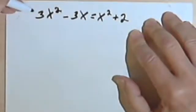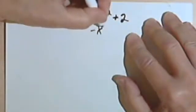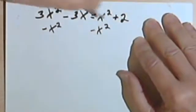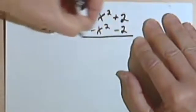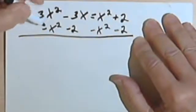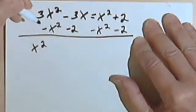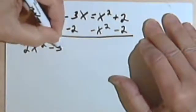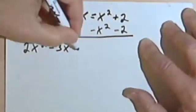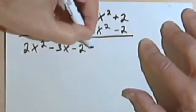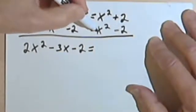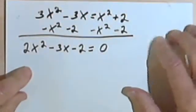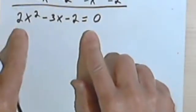What I want to do is get everything on one side — all the terms on one side. So I'll subtract x squared from both sides. You can subtract more than one thing at a time, so let's also subtract the 2 from both sides. 3x squared minus x squared is 2x squared. I've still got that negative 3x, and subtracting gives me a negative 2. On the right side, x squared minus x squared cancels, and 2 minus 2 cancels, so I've got 0 on the right. Now I've got a quadratic equation in standard form.